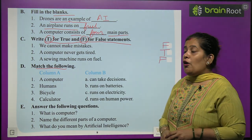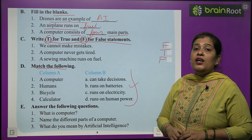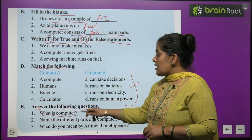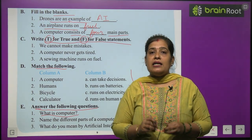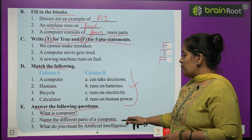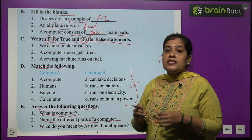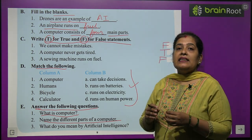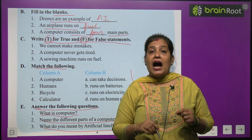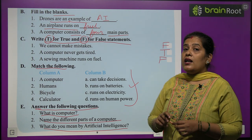Exercise D — Match the following. Aap chapter ko acche se read karenge aur khud karenge. You have to do it by yourself. Exercise E — Answer the following questions. Number 1: What is a computer? A computer is an electronic machine — computer ek electronic machine hai. Number 2: Name the different parts of a computer — CPU, mouse, monitor, and keyboard. Number 3: What do you mean by artificial intelligence? Aap ek baar chapter phir se padhenge aur question number 3 ka answer khud likhenge.